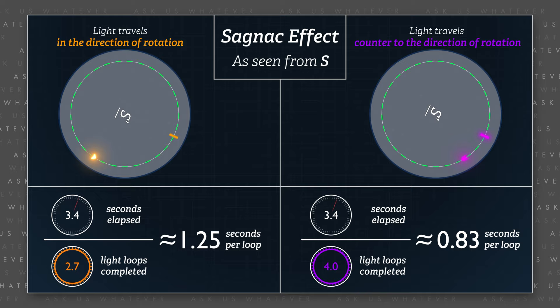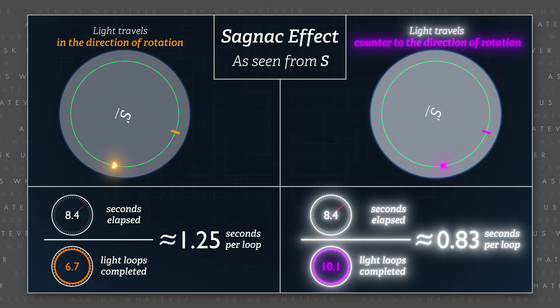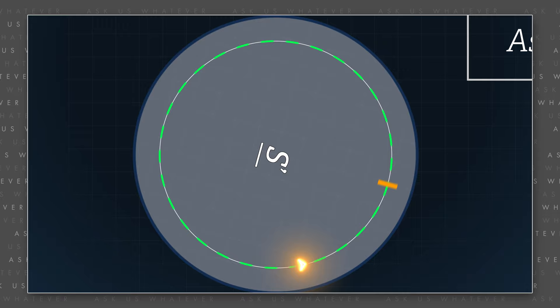The Sagnac effect was described by George Sagnac in 1913. Round-trip travel times along a closed loop in a reference frame in which the loop is rotating — let's call it S-prime — take longer when light travels in the direction of rotation than when counter to the direction of rotation.